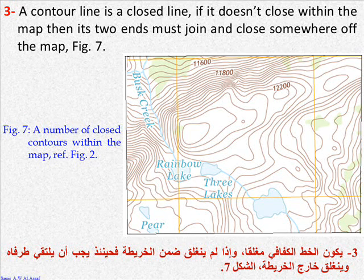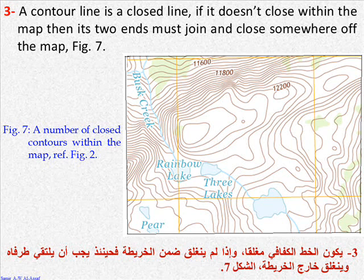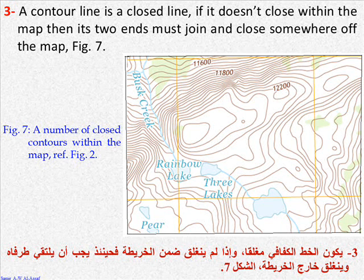Rule 3: a contour line is a closed line. If it doesn't close within the map, then its two ends must join and close somewhere off the map — see figure 7. Rule 4: closely spaced contour lines indicate steep slopes, whereas widely spaced contour lines indicate gentle slopes — figures 8a and 8b.